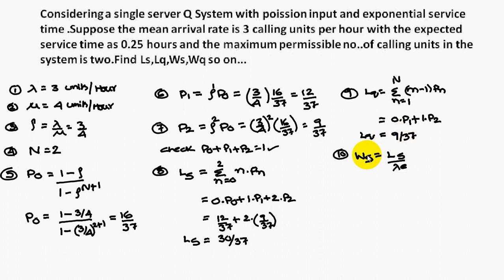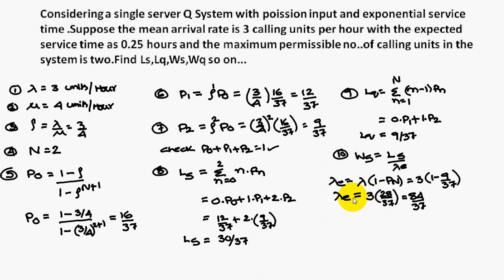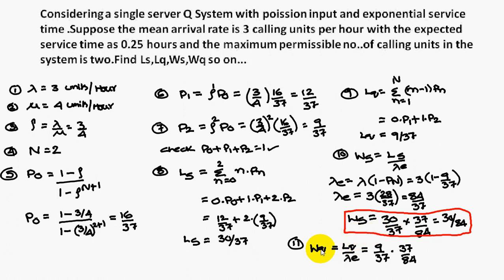The average waiting time of a customer in the system is Ls divided by the effective arrival rate. The effective arrival rate lambda-e equals lambda into (1 minus P(N)), which is 3 times (1 minus 9/37), giving 84/37. So waiting time in the system equals (30/37) divided by (84/37), which simplifies to 30/84. Similarly, the average waiting time in the queue is Lq divided by lambda-e, which is (9/37) divided by (84/37), giving 9/84.